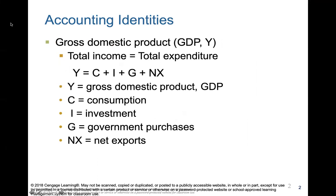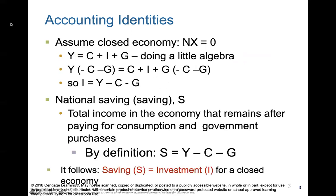Remember when we were talking about GDP, where GDP equals all consumption of individual households plus investment in the economy, plus government purchases, plus net exports minus imports? This is C plus I plus G plus NX, and we're going to use this again to show how economies work and how savings and investment works in an economy.